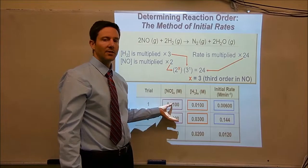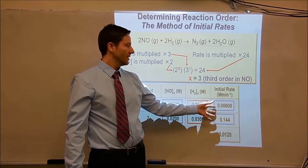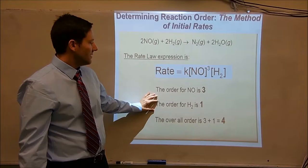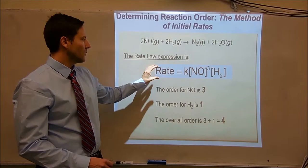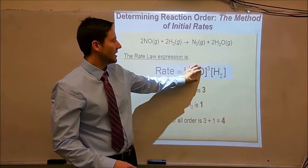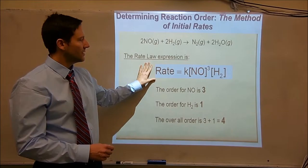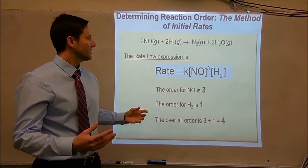We did that by just changing the initial concentrations of each of the reactants and monitoring what effect it has on the initial rate of the reaction. To summarize: the order for nitric oxide is three, the order for hydrogen is one, and the overall order of the reaction is fourth order. Here's the rate law expression: rate equals k, the rate constant, times nitric oxide to the third power times hydrogen to the first power. We got that by the method of initial rates.